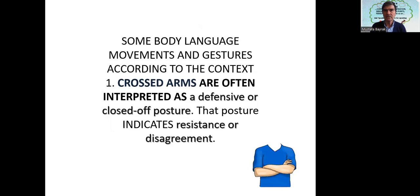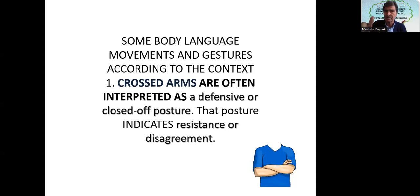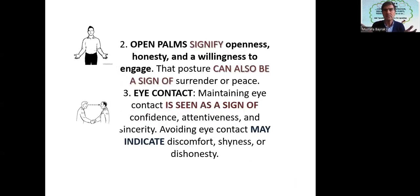Body language movements and gestures depend on context. Crossed arms are often interpreted as a defensive or closed posture that indicates resistance or disagreement. Open palms signify openness, honesty, and willingness to engage. That posture can also be a sign of surrender or peace.